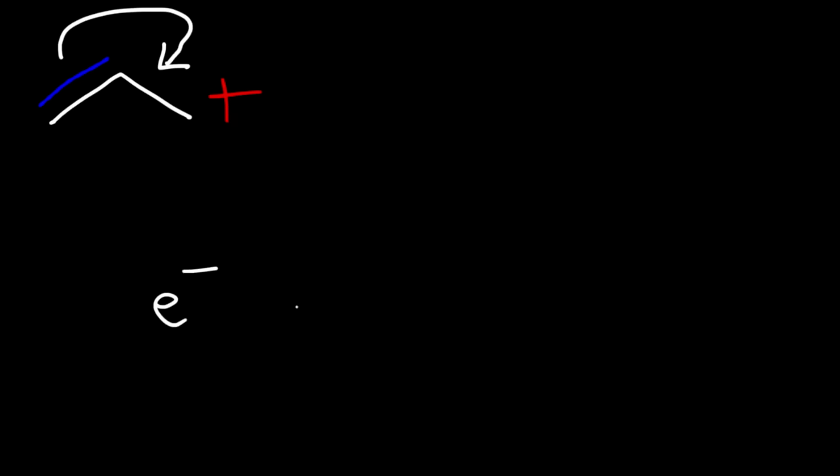In this lesson we're going to talk about resonance structures. How can we draw the resonance structure for this allylic carbocation? The first thing you should do is start the arrow from the double bond, and it's going to flow towards the positive charge. Electrons will flow from a region of high negative charge towards a region of low negative charge, or from negative to positive.